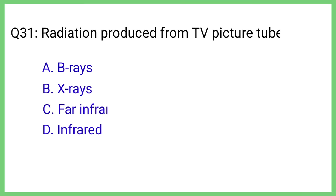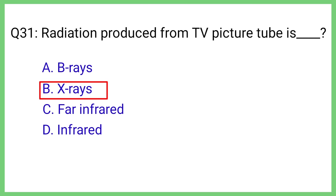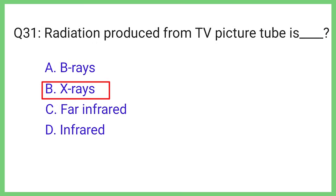Question No. 31. Radiation produced from a TV picture tube is. The correct answer is Option B. X-rays.